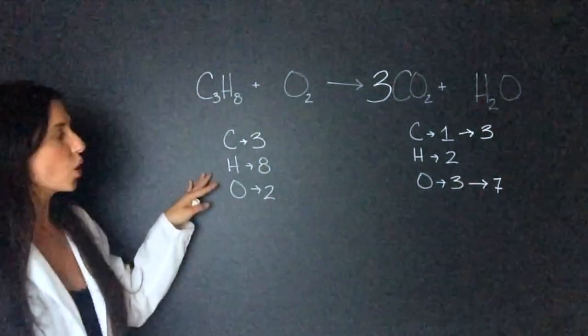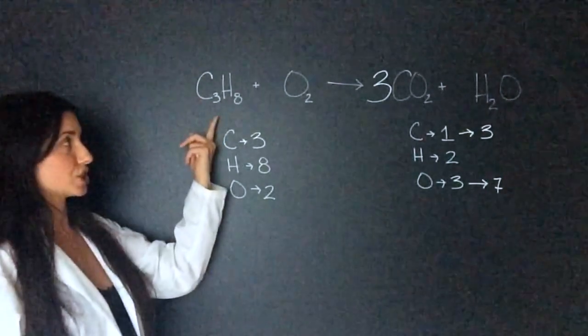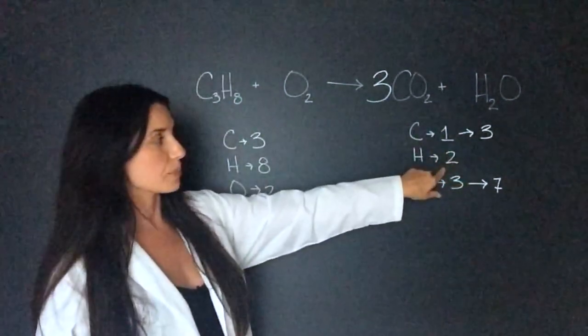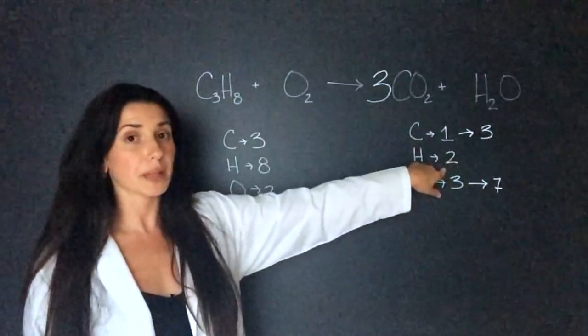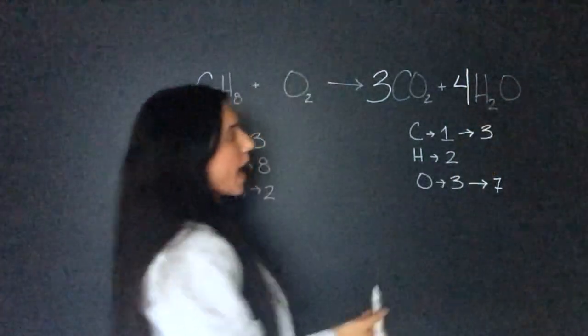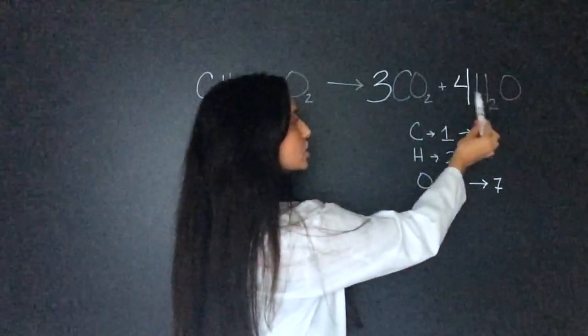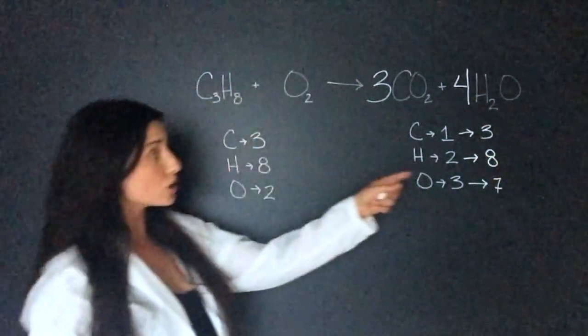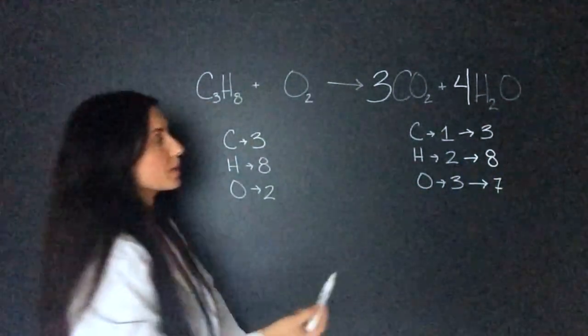So let's do the hydrogens. We have eight hydrogen over here and only two over here. So to get this number to eight, we're going to want to multiply it by four. So let's put a four in front of here.